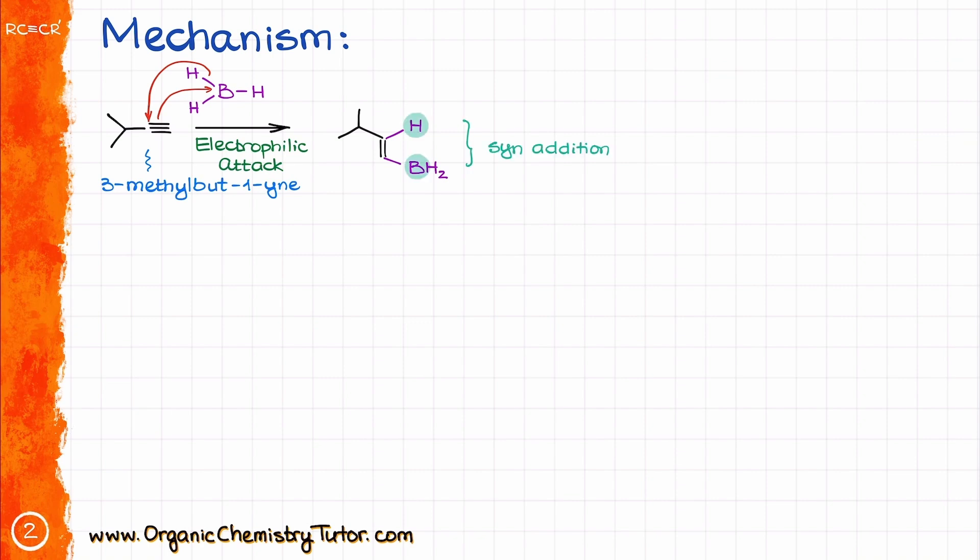Since this is a syn addition, both hydrogen and boron will end up on the same side of the newly formed double bond, cis to each other. Like in the case with alkenes, one equivalent of our borane may potentially react with multiple alkynes, but with alkynes it's less likely. For simplicity's sake, we'll pretend that it only happens once regardless.